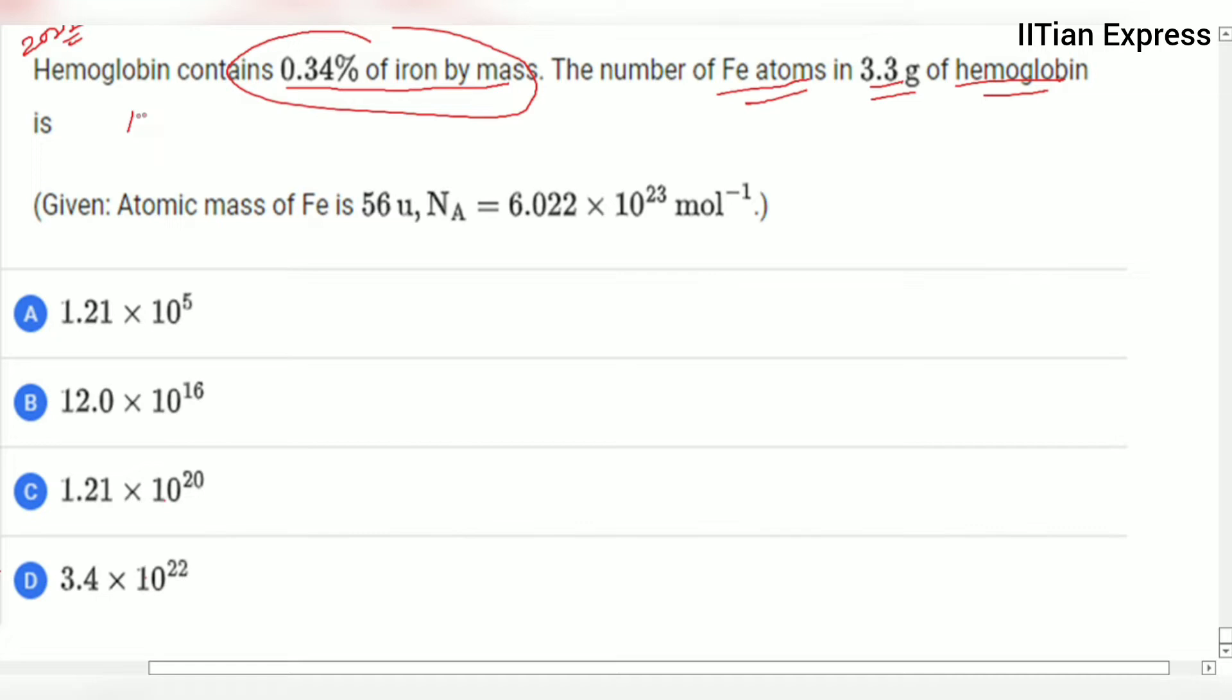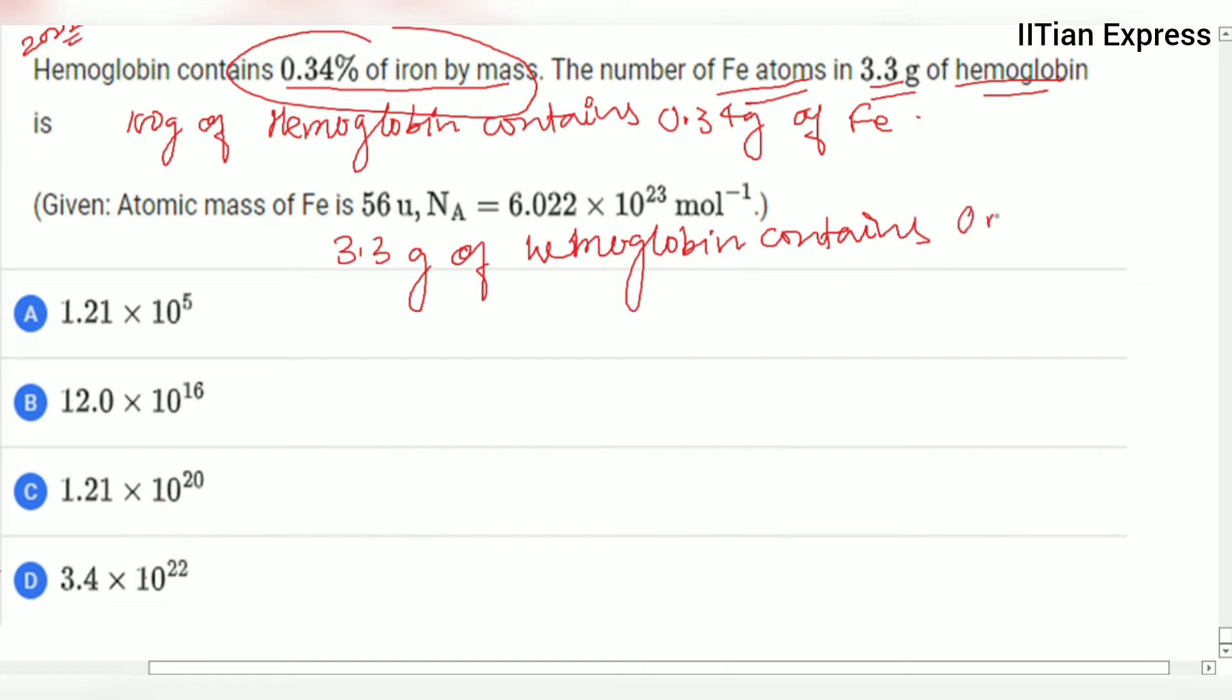From these statements we are going to say 100 grams of hemoglobin contains 0.34 grams of iron (Fe). Then 3.3 grams of hemoglobin contains 0.34 divided by 100 multiplied by 3.3 grams of Fe.